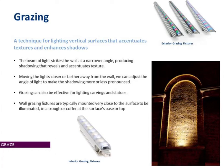In addition to changing the beam angle of the luminaire, you can also play with the distance of the luminaire to the wall, and adjusting that angle can make the shadows less or more pronounced. These fixtures, because they're mounted fairly close to the surface, are often hidden inside a trough or a coffer. Typically they're linear with narrow beam angles, and often purposed for either interior or exterior use.